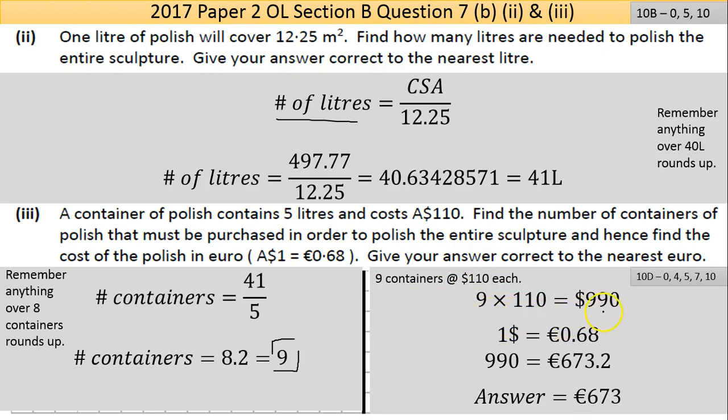That's in Australian dollars, but you want to find what that is in euros. We're given an exchange rate of 1 Australian dollar equals €0.68. If 1 dollar equals 68 cents, then 990 dollars equals 990 × 0.68 = €673.2. To the nearest euro, that rounds down to €673.